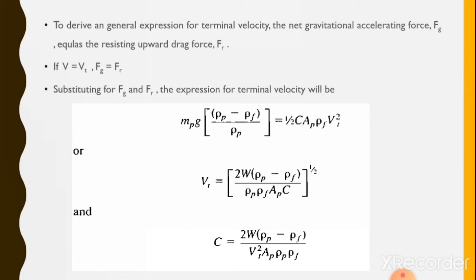Substituting the forces Fg and FR, the expression for terminal velocity is derived. The rearranged formula also gives: C = 2W(ρp − ρf) / (Vt² · Ap · ρp · ρf), where Vt is terminal velocity and C is the overall drag coefficient.